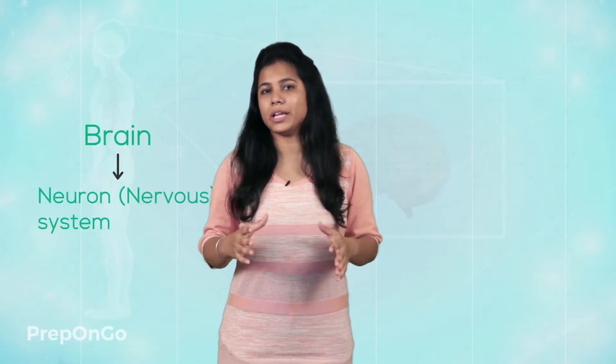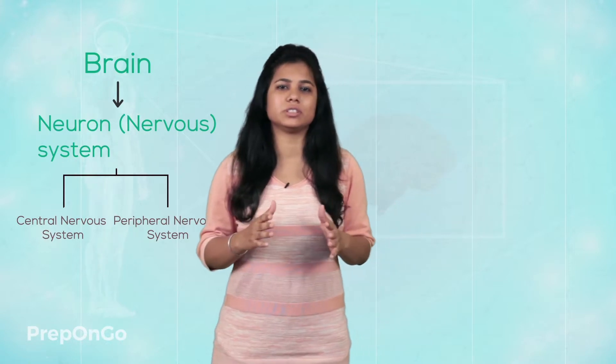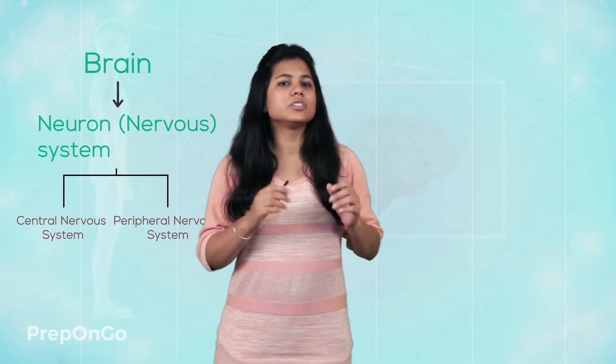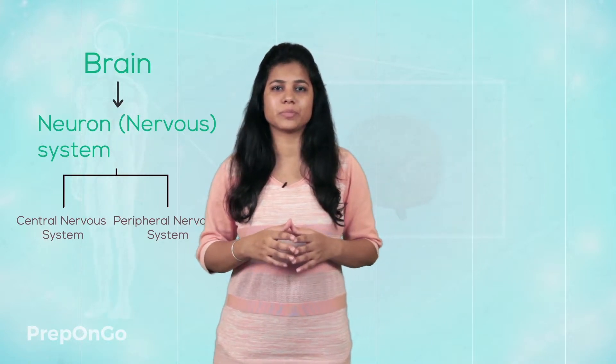The neuron system is very complicated and it is connected to the brain. This neuron system is divided into two different systems: the central nervous system and the peripheral nervous system.